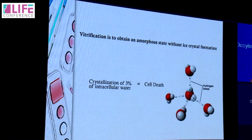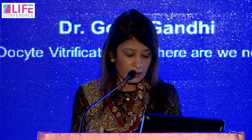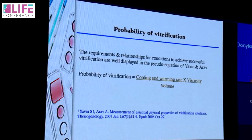Vitrification requires obtaining an amorphous state without ice crystal formation. If even three percent of intracellular water converts into ice, it can cause cell death. Ice crystals growing under a microscope can be seen cutting into and damaging cell organelles, so it is very important to avoid them. Mathematically, the probability of successful vitrification increases if we can increase cooling and warming rate and decrease the volume — and this was the most successful strategy applied for vitrification.